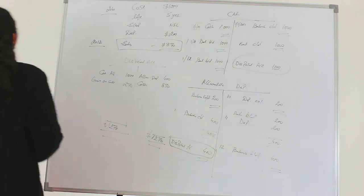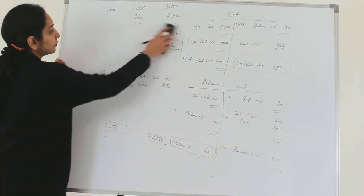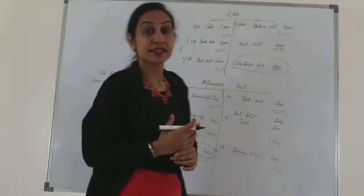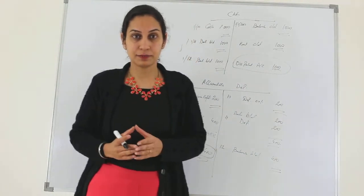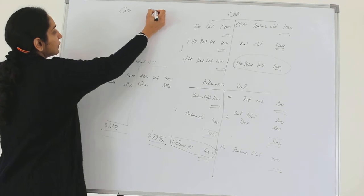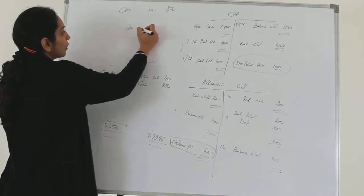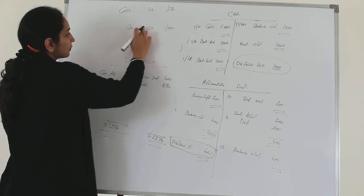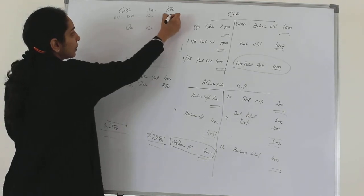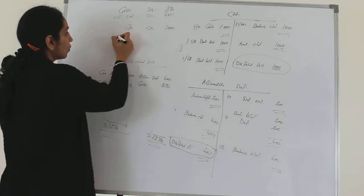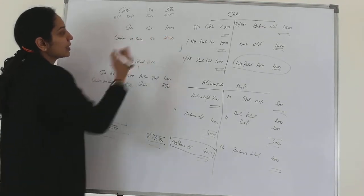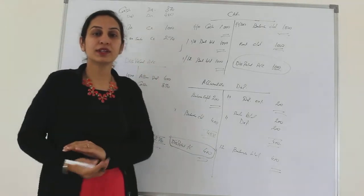This is how we make entries for disposal of an asset. I am sure we are clear about the concept of disposing or selling an asset. Let's make a journal entry for it now. The journal entry will be: cash account debited $870, accumulated depreciation account debited $400, car account credited $1000, and gain on sale credited by $270. With parking this entry, we are done with disposing.